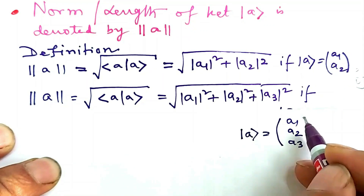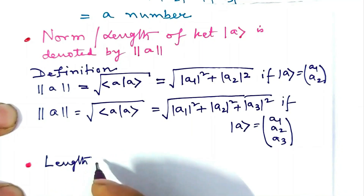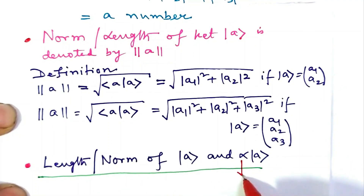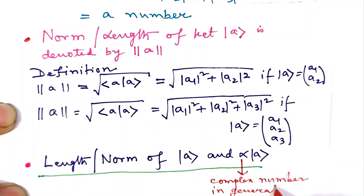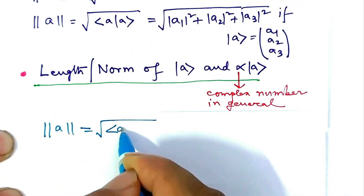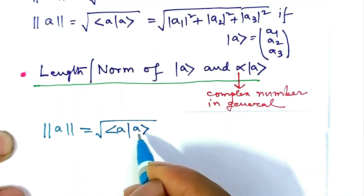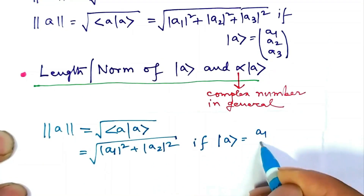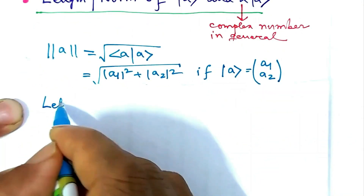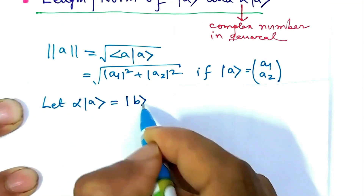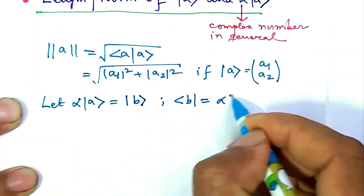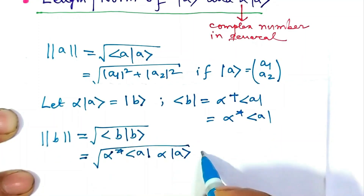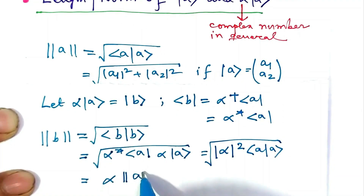We next evaluate the length or norm of ket A and of α times ket A, where α is a complex number in general. The norm of ket A is √(bra A ket A) = √(|a1|² + |a2|²) if ket A is the column matrix (a1, a2). Now let α·ket A be denoted by ket B; then bra B is α*·bra A. So the norm of ket B turns out to be |α| times the norm of ket A.